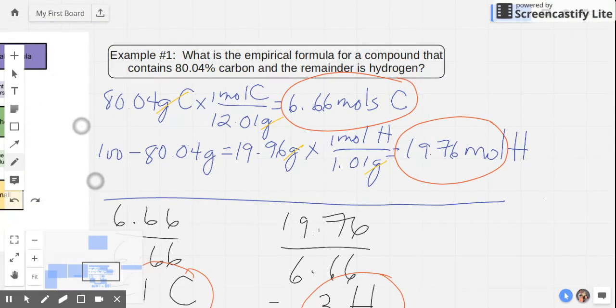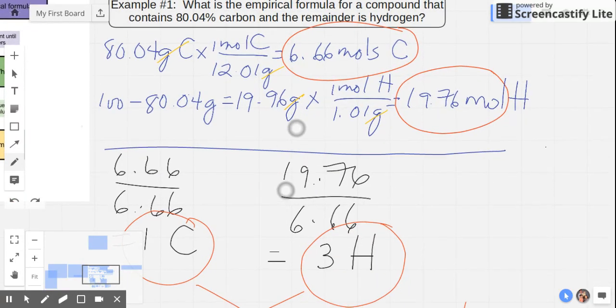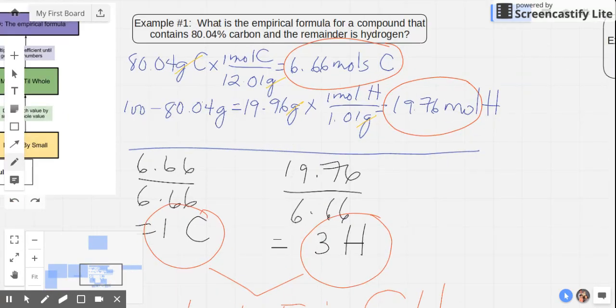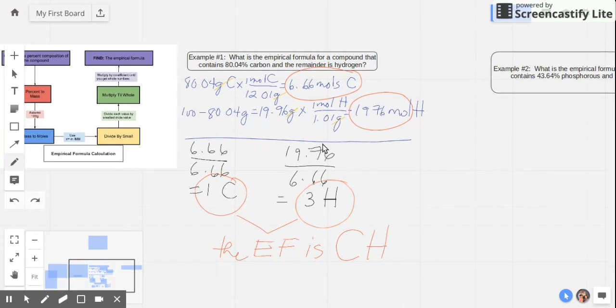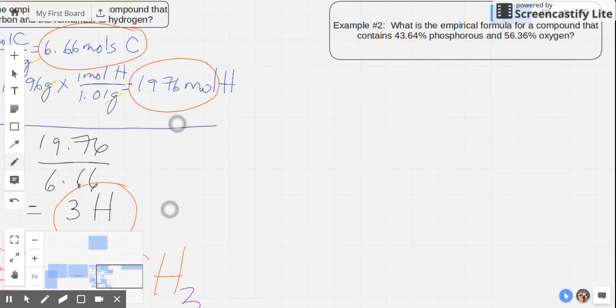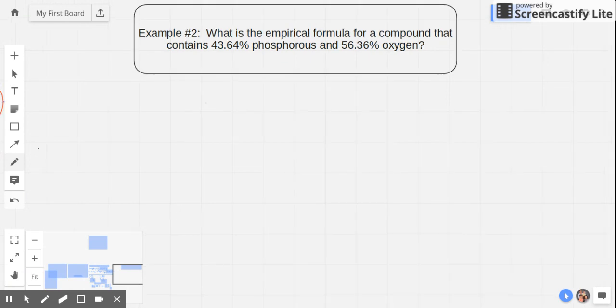This was the example that we did in the first video. This was a complete example of carbon and hydrogen in which it readily gives us a whole number answer for carbon and hydrogen, so we can easily say that it's CH3. Now let's go to the second example here. What if it's not going to be a whole number?